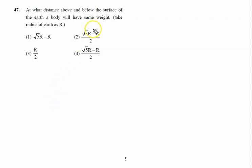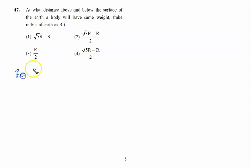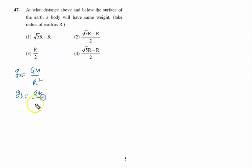At what distance above and below the surface of the earth will a body have the same weight? Take radius of the earth as R. We know gravity at the surface is given by GM upon R square, and gravity at any height h is written as GM upon (R plus h) whole square.